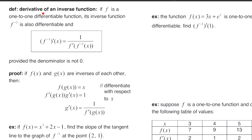Next we look at the derivative of an inverse function. If f is a one-to-one differentiable function, its inverse function f inverse is also differentiable, and the derivative is given by the formula one divided by f prime of f inverse of x, provided the denominator does not equal zero. Proof: if f and g are inverses, then f of g of x equals x. Differentiating via the chain rule gives f prime of g of x times g prime of x equals one. Isolating g prime gives g prime of x equals one over f prime of g of x, which matches the formula since g is f inverse.